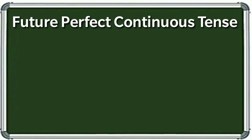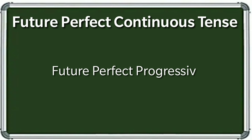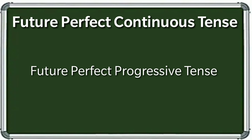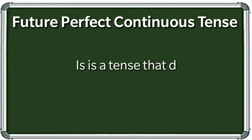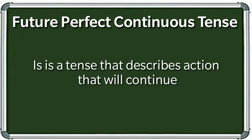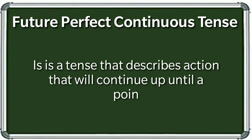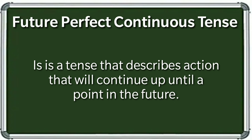Hello guys, welcome in the new video of English Grammar of Lothi Ka Blogs Fix Easy. Aaj hum seekhne ja rahe hain future perfect continuous tense. Future perfect continuous tense is also known as future perfect progressive tense because in this tense we talk about the action that will continue up until a point of time in future.